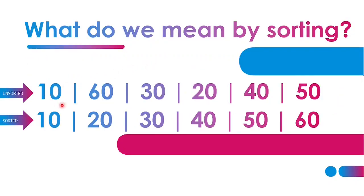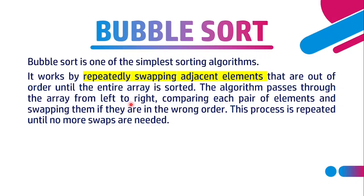Let's look at the previous unsorted array. The first pair, 10 and 60, are in ascending order — 10 is less than 60 — so we don't need to swap them. We only swap elements that are out of order. The next pair, 60 and 30, are out of order because 60 is greater than 30, so we swap them. We go on comparing pair by pair from left to right until the entire array is sorted.